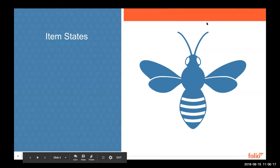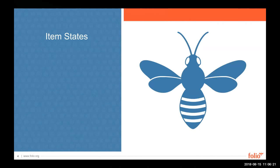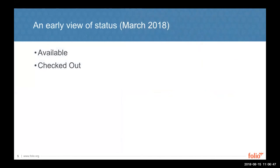My name is Emma Boettcher and I am the product owner for loans. Before giving a tour of what that looks like in the system, I want to give an overview of discussions from the resource access SIG over the past few months, where a major topic has been how Folio will handle item status. While not all of this is in development yet, we arrived at a consensus earlier in the summer. I'll start by taking us back to spring, around early March, where we only had two statuses: available and checked out—the two needed when checkout and check-in apps were developed.